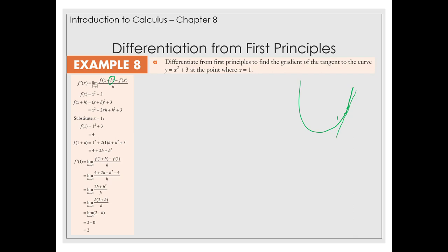This symbol h here represents a really, really tiny value, which is why we've got this limit as h is approaching zero. The notation, we've got f dash of x, whereas f of x is the function, f'(x) is the gradient of that function at x.